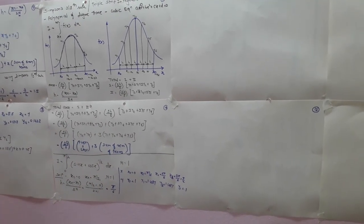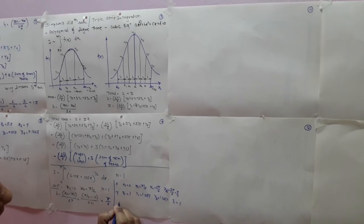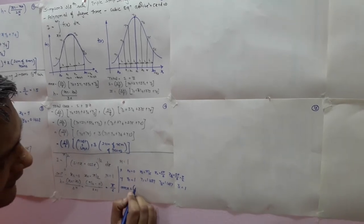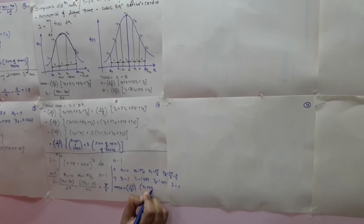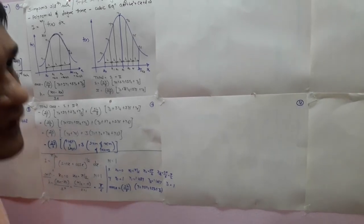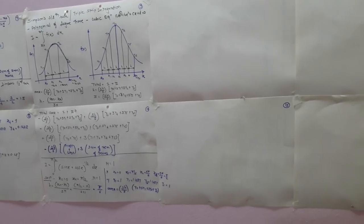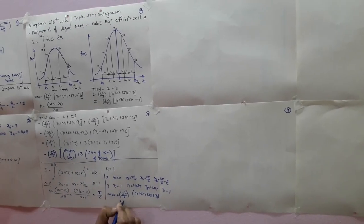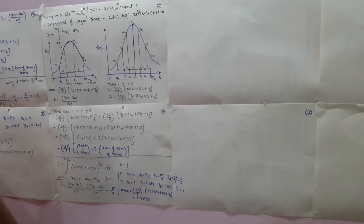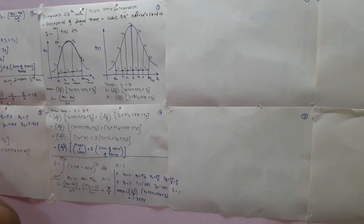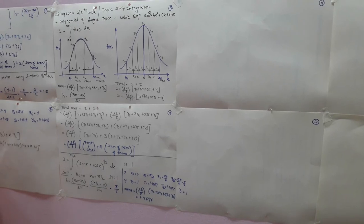Now we write the formula: Area = (3h/8)(y₀ + 3y₁ + 3y₂ + y₃). Filling in all values, the total area equals 1.7696. By Simpson's 3/8 rule, the total area is 1.7696. You can solve additional numericals from your assignment, available on our website. This concludes the topic of Simpson's 3/8 rule, that is triple strip integration.